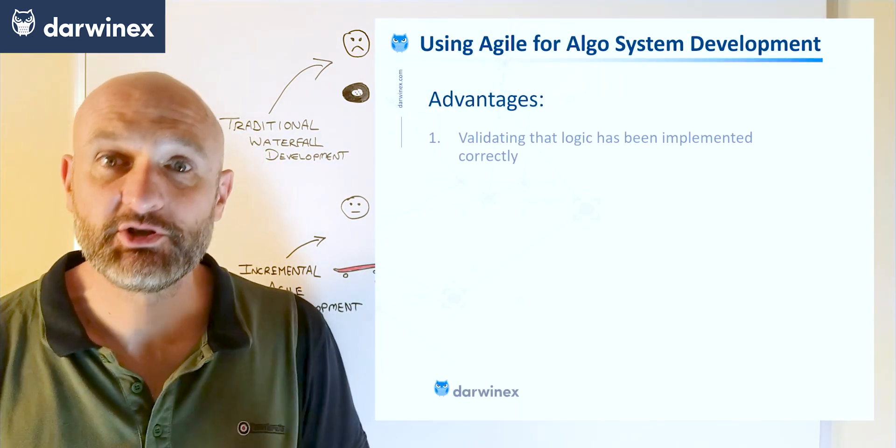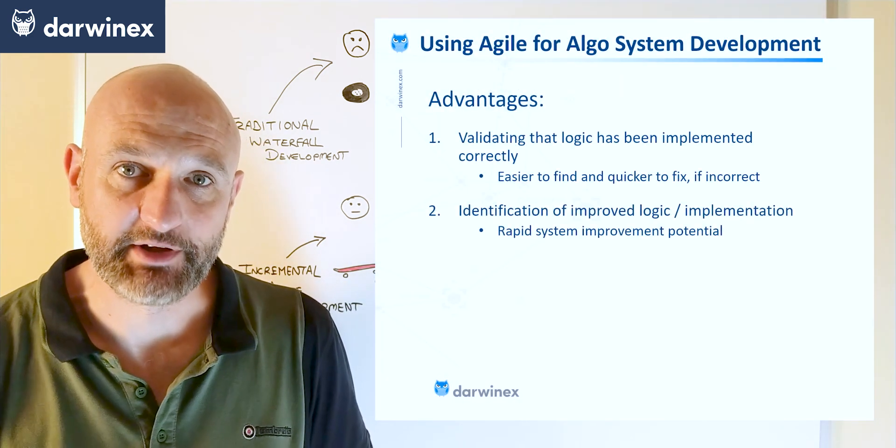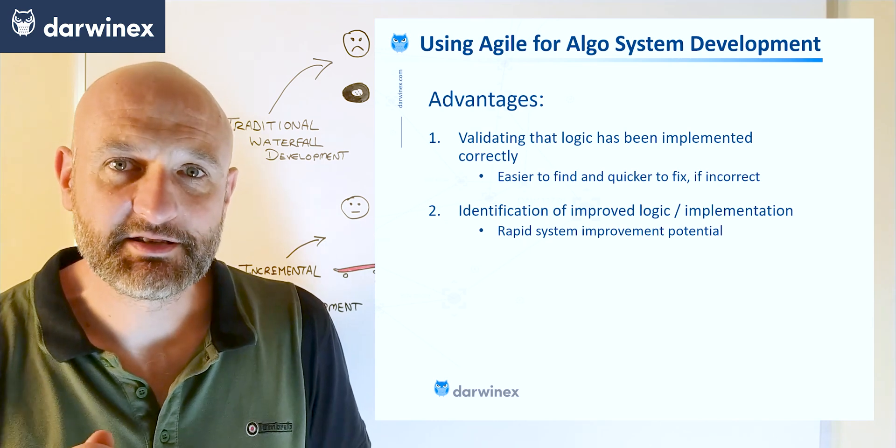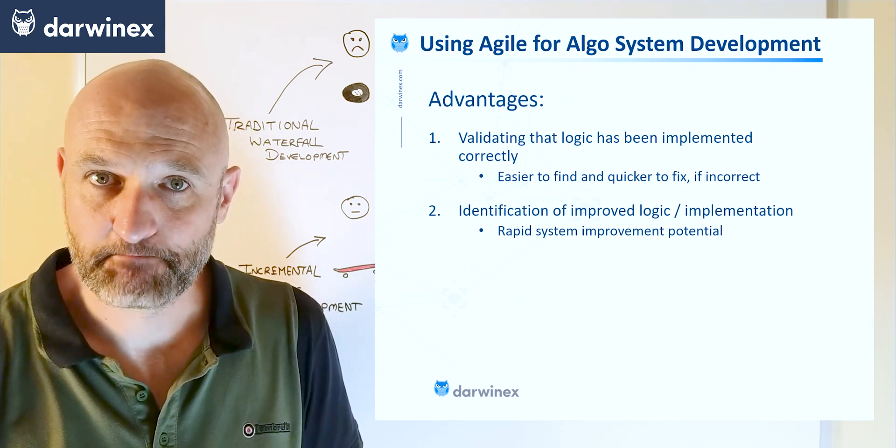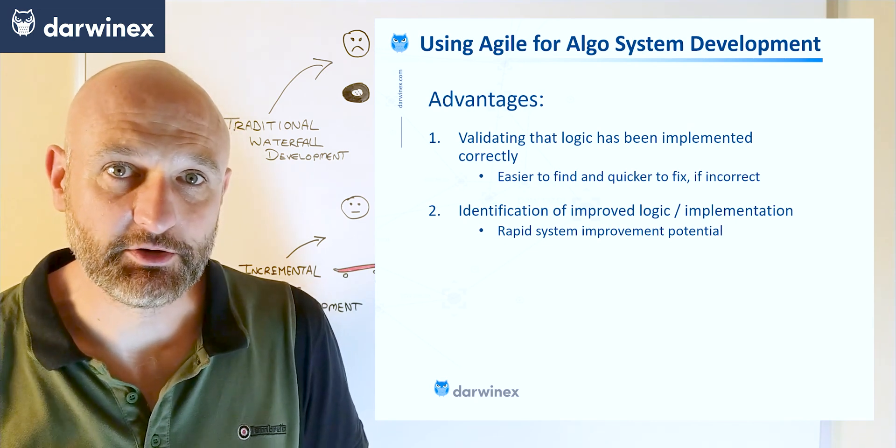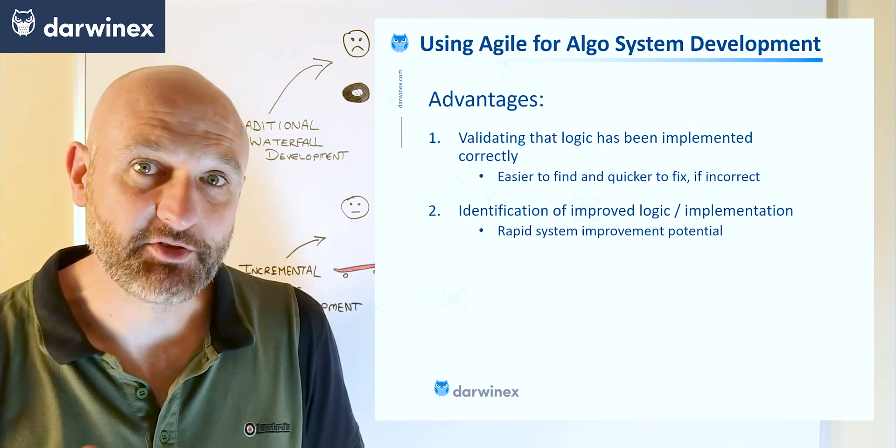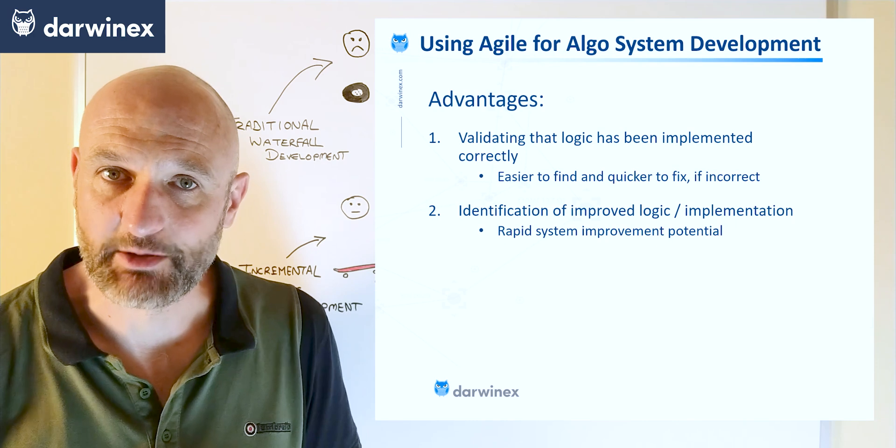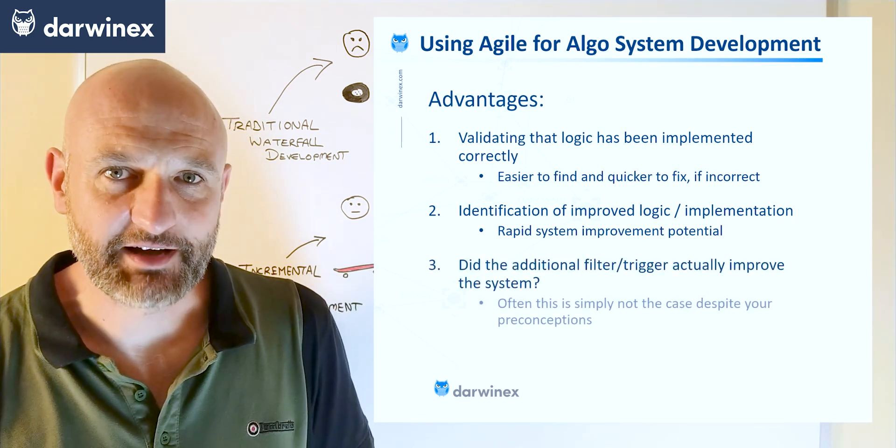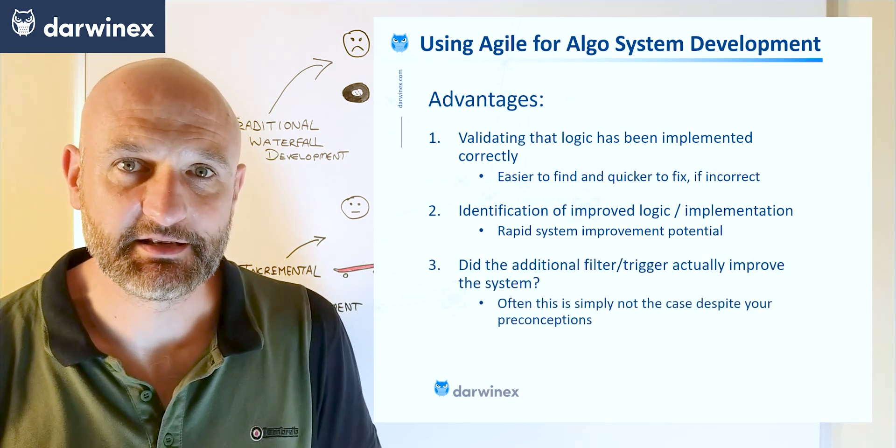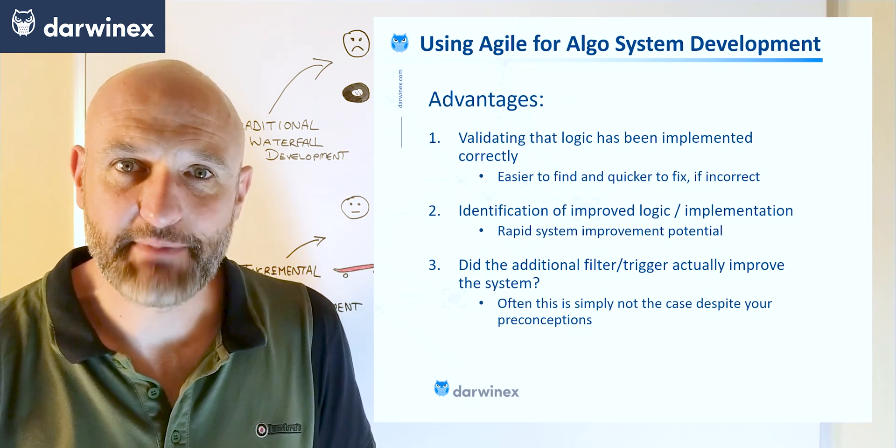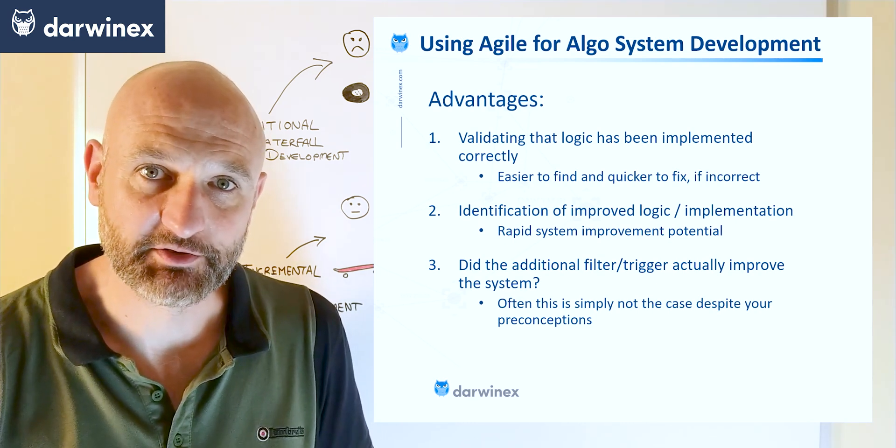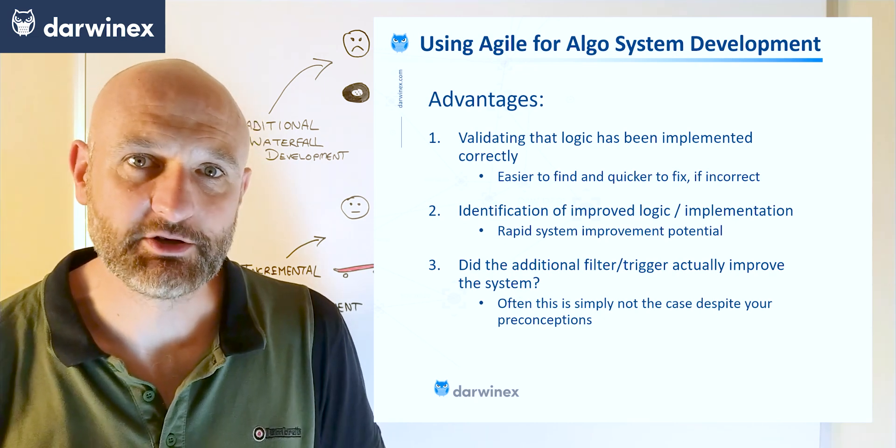So once more, we're looking for the same two things that we looked for in the previous stage. We're looking to see that firstly, the logic has been implemented in the code correctly. And we're also looking out for clues from the trades about whether the logic can be improved in any way. But there's a third factor that we also need to take into consideration now. And this is whether the filter actually made a significant improvement to the overall back test results.